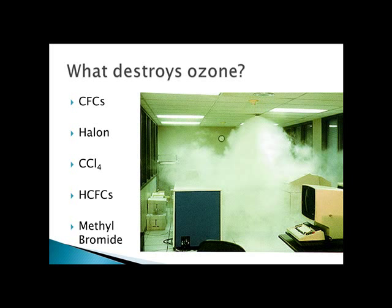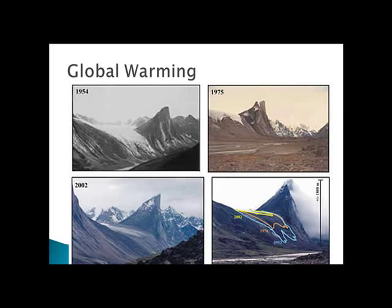Methyl bromide is an effective pesticide used to fumigate soil and many agricultural products. Because it contains bromine, it also depletes stratospheric ozone, and production was phased out in this country in 2005. Global warming is the increase in the average temperature of the Earth's near-surface air and oceans since the mid-20th century and its projected continuation. Global surface temperature increased 0.74 ± 0.18 degrees Celsius, or between 1 and 2 degrees Fahrenheit, during the last century.